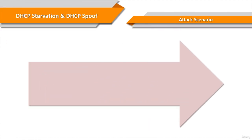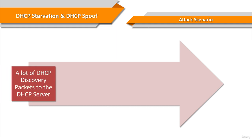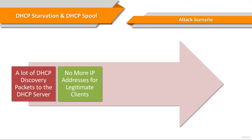Here is how we can perform a DHCP spoof attack together with a DHCP starvation attack. We'll create a lot of DHCP discovery packets to request new IP addresses from the DHCP server. The DHCP server replies to these requests. IP address space is limited — for example, a Class C subnet has about 250 IP addresses available. Since the IP addresses are used for fake MAC addresses, there aren't any more IP addresses for legitimate clients.